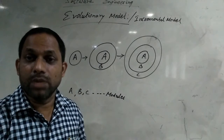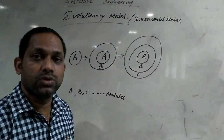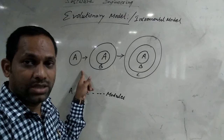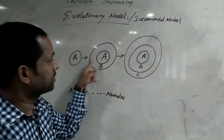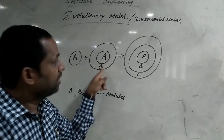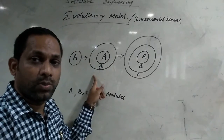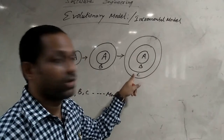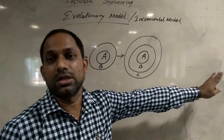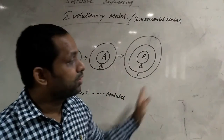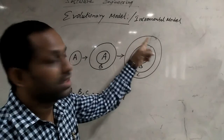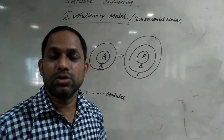Suppose the whole project is divided part by part. The main module is developed first — A is the main module, we can say it is the core module. First, module A is developed. Then we can add modules incrementally. We add module C, module Z, and so on. The incremental model means we increment, develop successively, and add modules one by one.